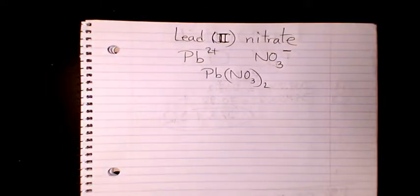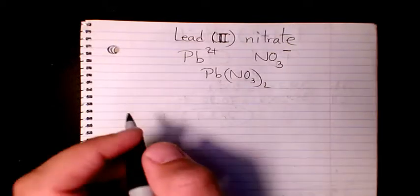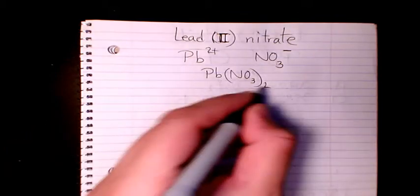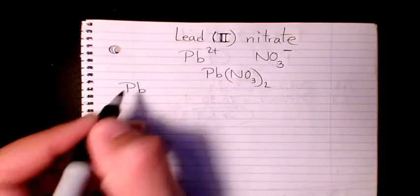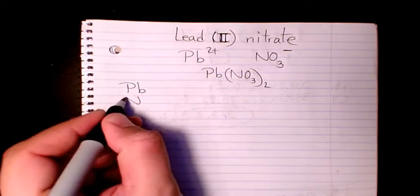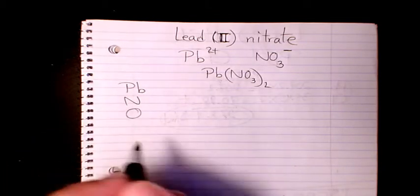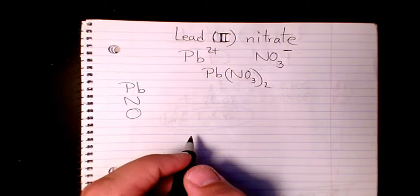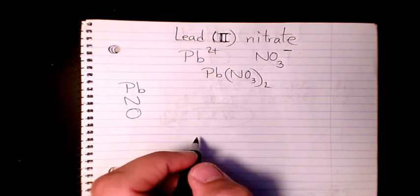Now if I want to find out the molar mass or molecular weight of lead two nitrate, I need to start with listing the elements we have. We have Pb which is lead, we have nitrogen N, and we have oxygen O.